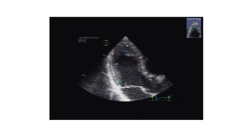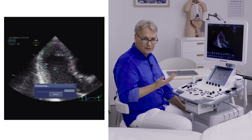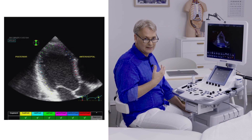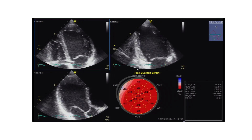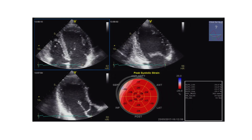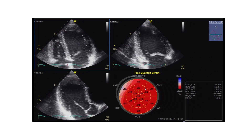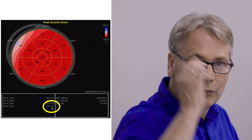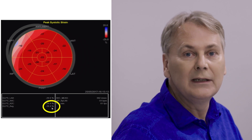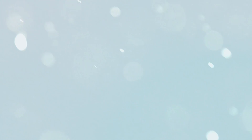The contour was found quite nicely. If you're not happy, you can reanalyze it. We have all three apical views that we were using. We've got the bullseye display. We have minus 20.4%, which denotes a completely normal longitudinal strain.